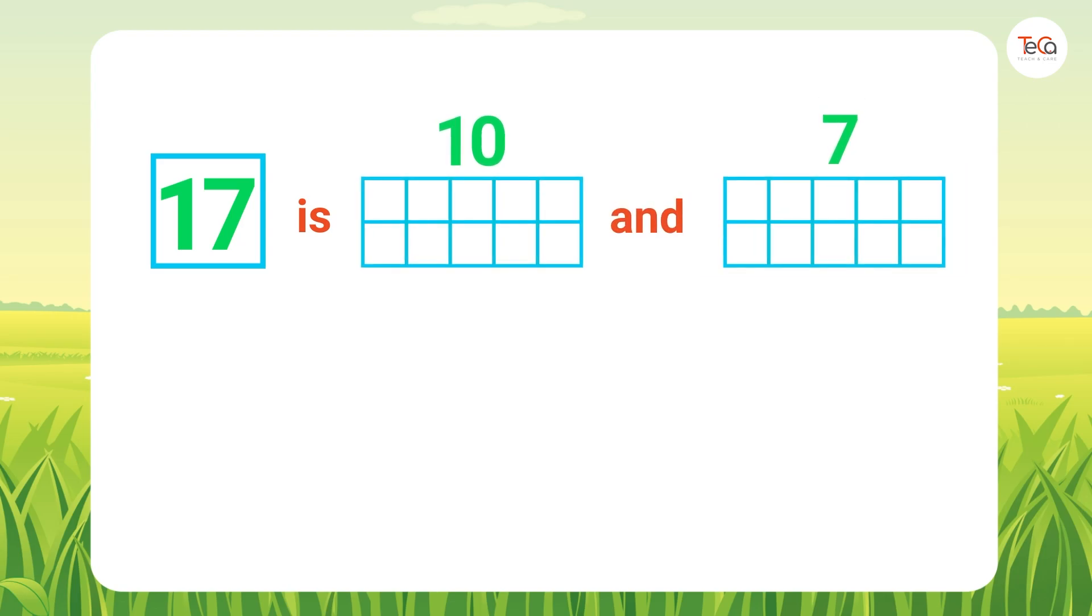Next, 17 is 10 and 7. To show this number sentence, draw 10 dots here. Then, 7 dots here to show number 7.